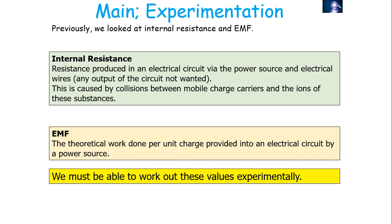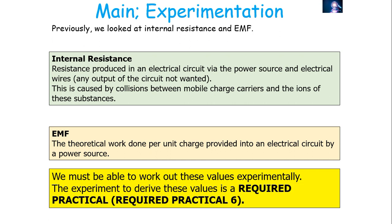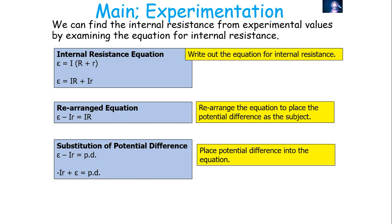We've got to be able to determine both these values experimentally, which is required practical 6 of AQA A-level physics. We can find the internal resistance from experimental values by examining the equation for internal resistance. The internal resistance equation, which is given to you in your examination book, is: EMF equals current times external resistance, big R, plus internal resistance, small r.